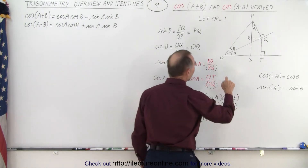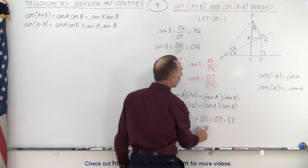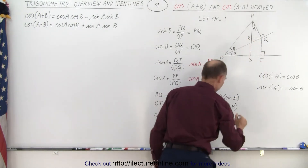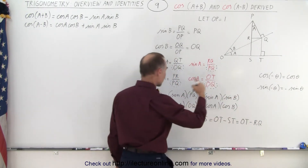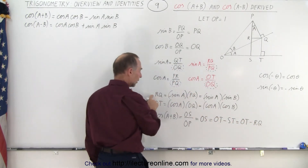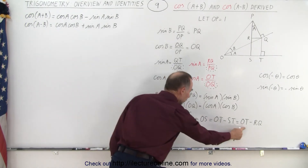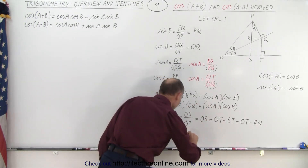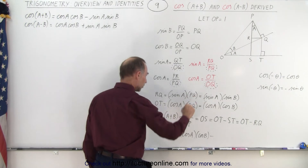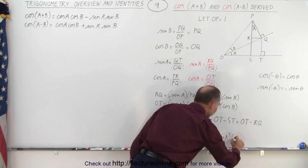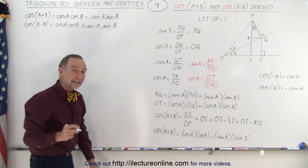OS can be defined as OT minus ST, and ST is the same length as RQ, so we can write this as OT minus RQ. Since OT equals cosine A times cosine B, and RQ equals sine A times sine B, the cosine of A plus B is therefore equal to cosine A times cosine B minus sine A times sine B. And that is indeed the identity for the cosine of A plus B.